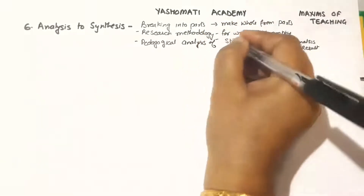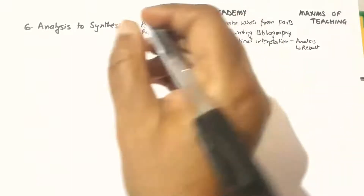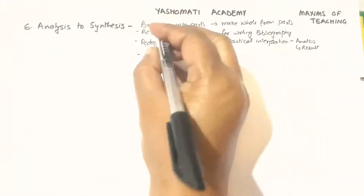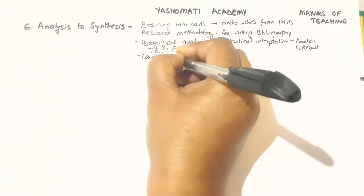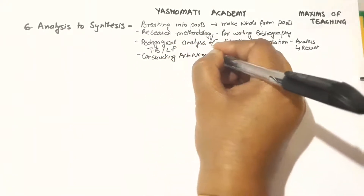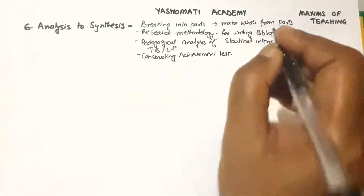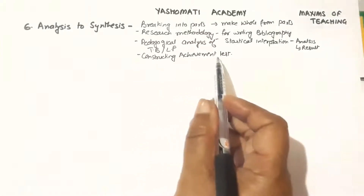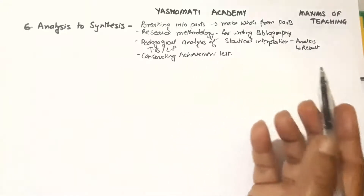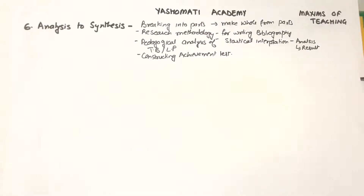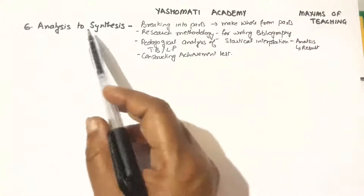Pedagogical analysis of textbook or lesson plan has another very important use — when we are constructing an achievement test, or what we call an examination paper. When a teacher has to prepare an achievement test, first he analyzes the previous question papers to understand how the paper has been made, what its different parts are, how many questions are asked, what kind of questions, and how many marks are allocated. Then by analyzing the previously made papers, he is able to make a new question paper for his learners. So there also we are using this maxim.